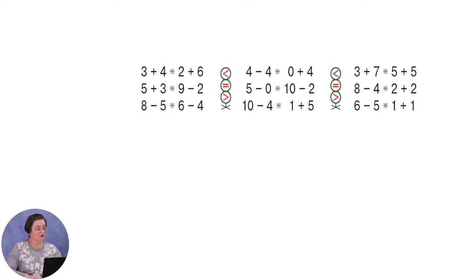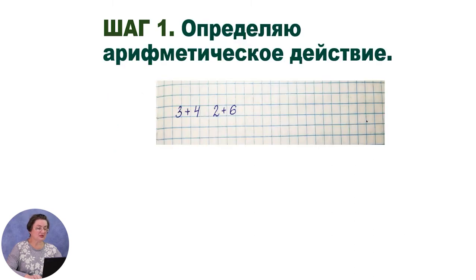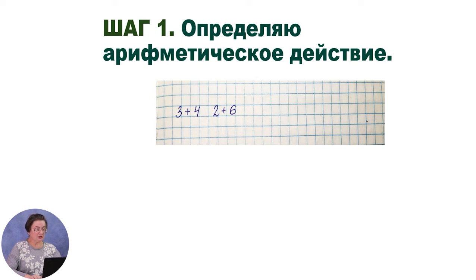В следующем задании нужно не только решить примеры, но и сравнить результаты. Напоминаю: для успешного выполнения задания нужно выполнить 4 шага — определить арифметическое действие, вычислить и записать результат над арифметическим знаком, затем сравнить результаты. Записываем первый пример: каждый знак и каждая цифра пишутся в отдельной клеточке. 3 плюс 4. Через одну клетку вправо пишем 2 плюс 6. В обеих частях действие сложения — первый шаг выполнили.